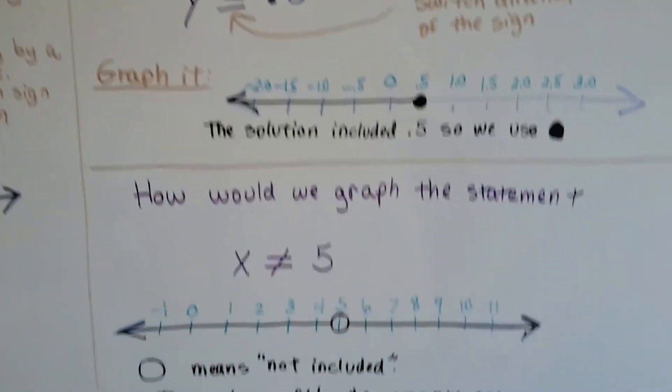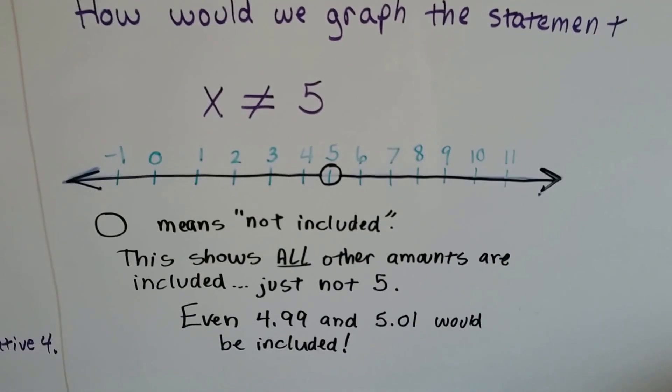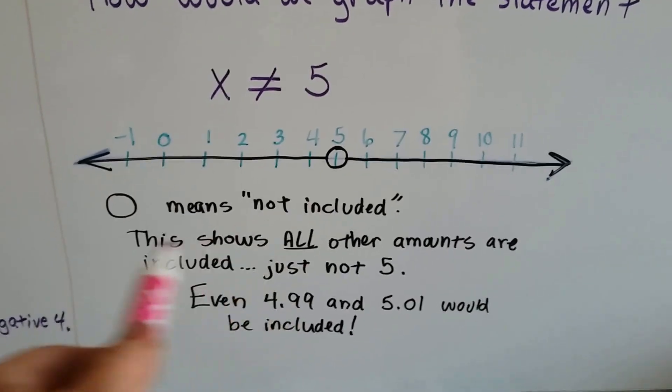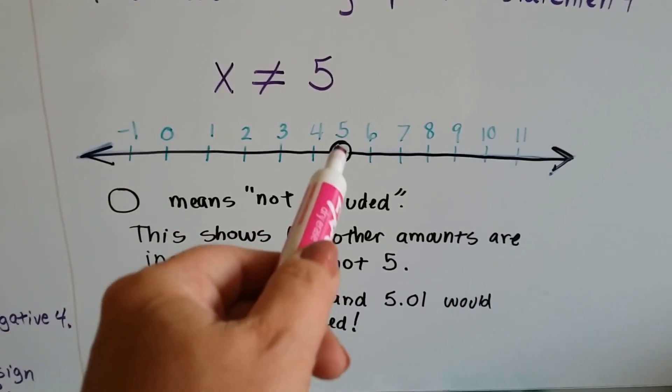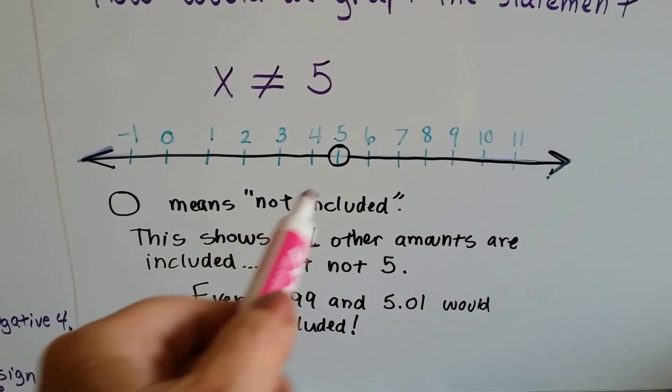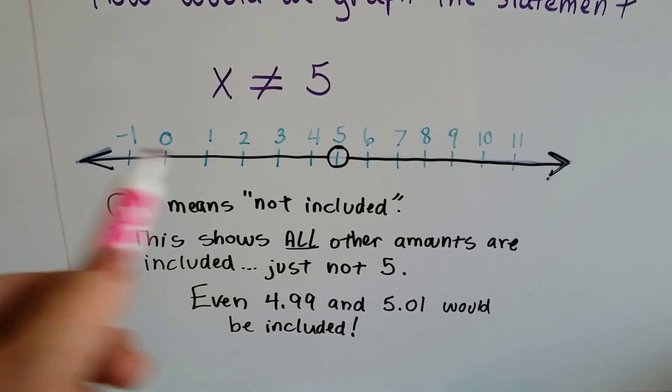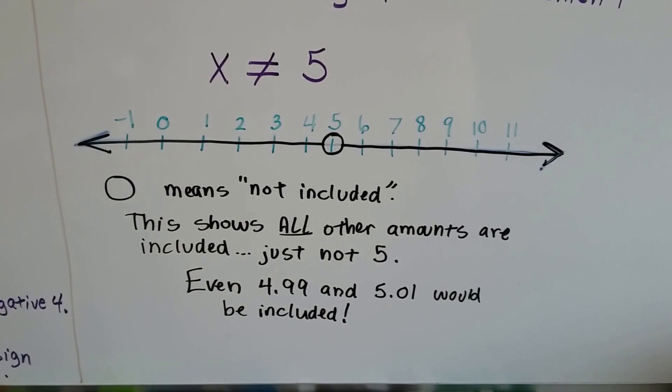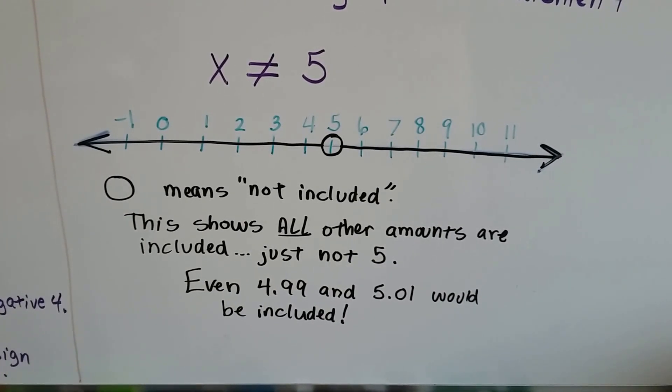Last thing I want to show you is, how would we graph the statement x is not equal to 5? Well, we'd actually use the open circle, which means not included, and our arrows would go both directions. This is saying that x is not 5, but it could be anything to the left or right of it. It shows all the amounts that are included, just not 5.